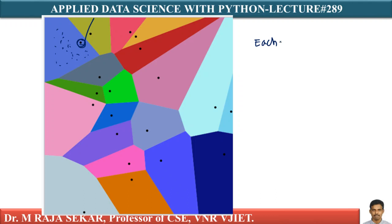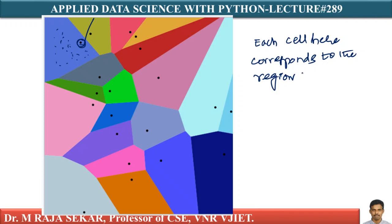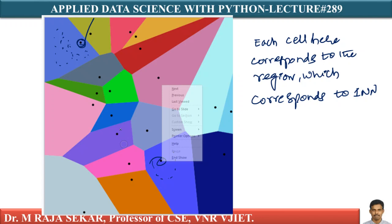Each cell here corresponds to the region which corresponds to one nearest neighbor. In this region, if you take any point, this particular point will be the one nearest neighbor. Consider any point in a particular region or cell — all those points will have the same one nearest neighbor.